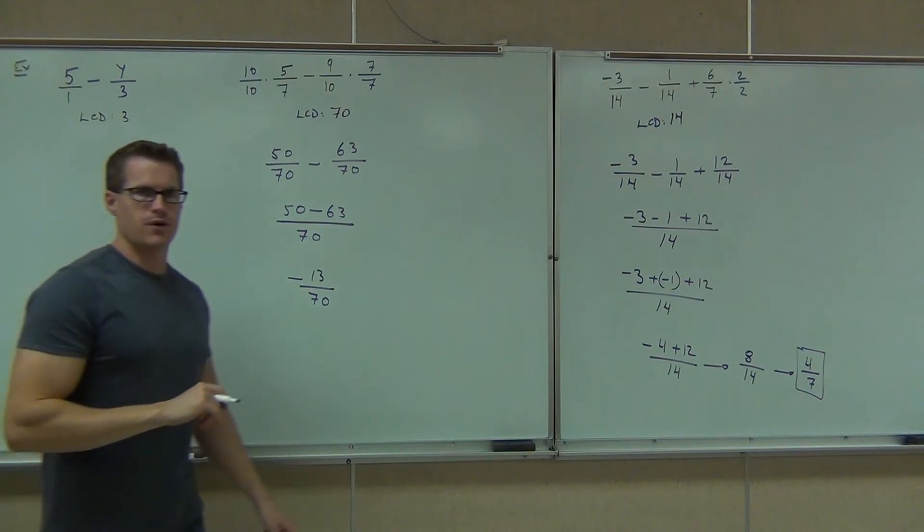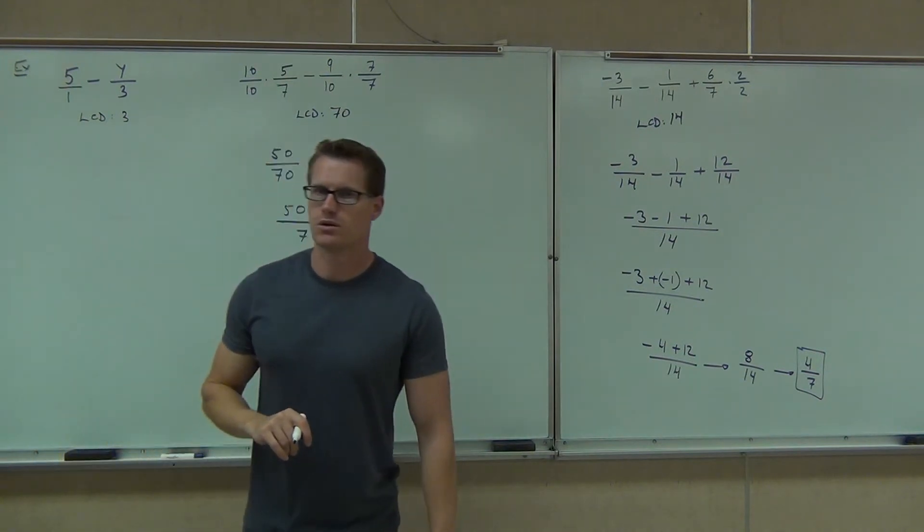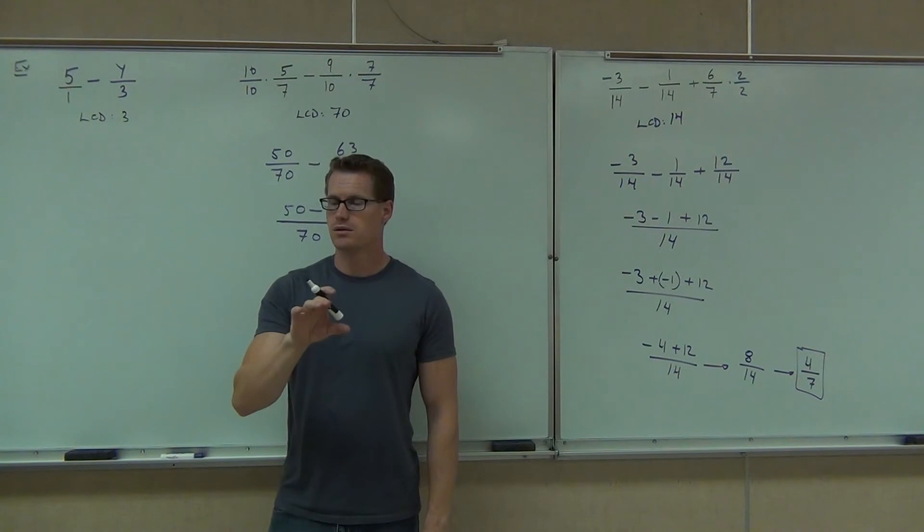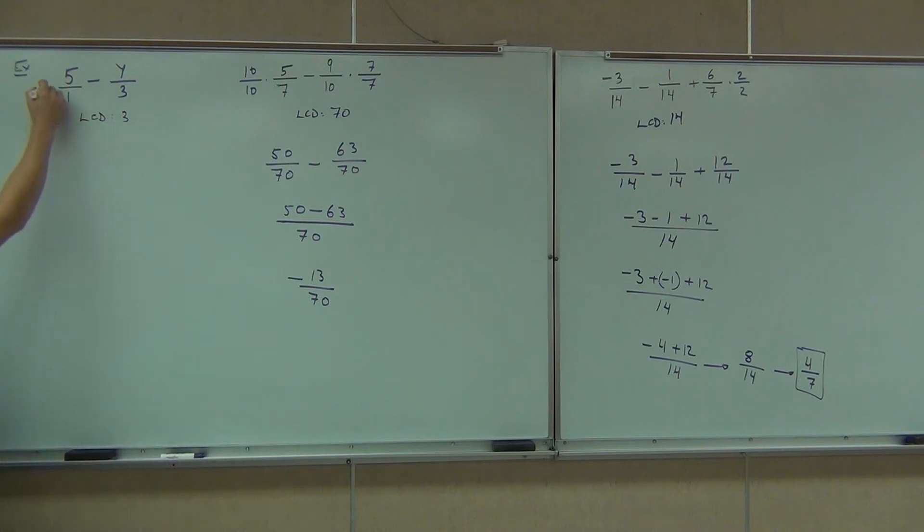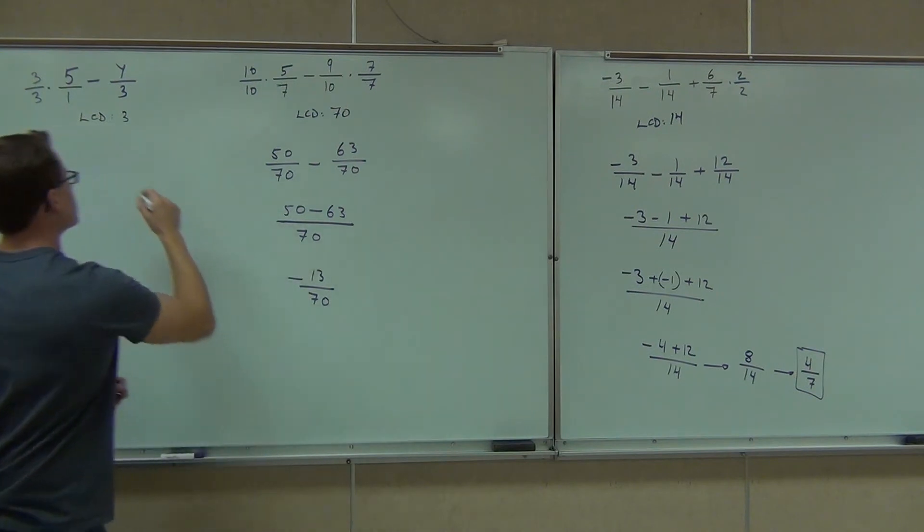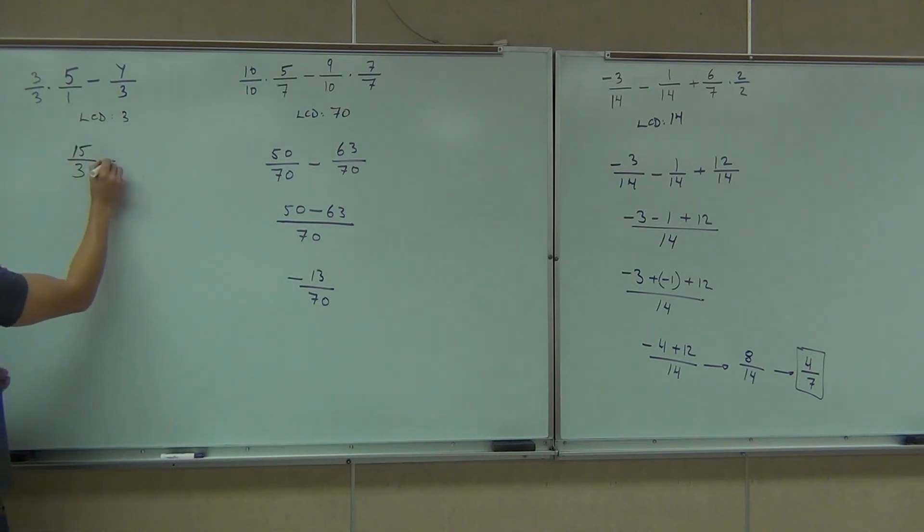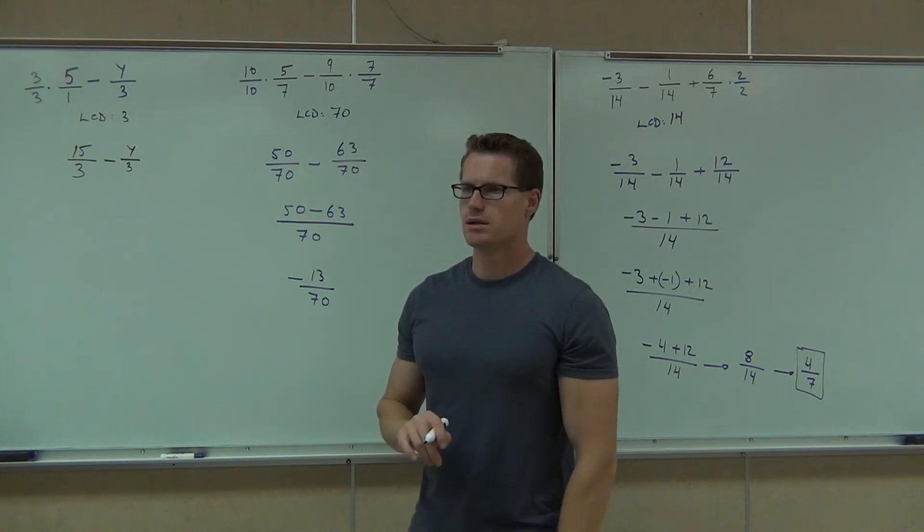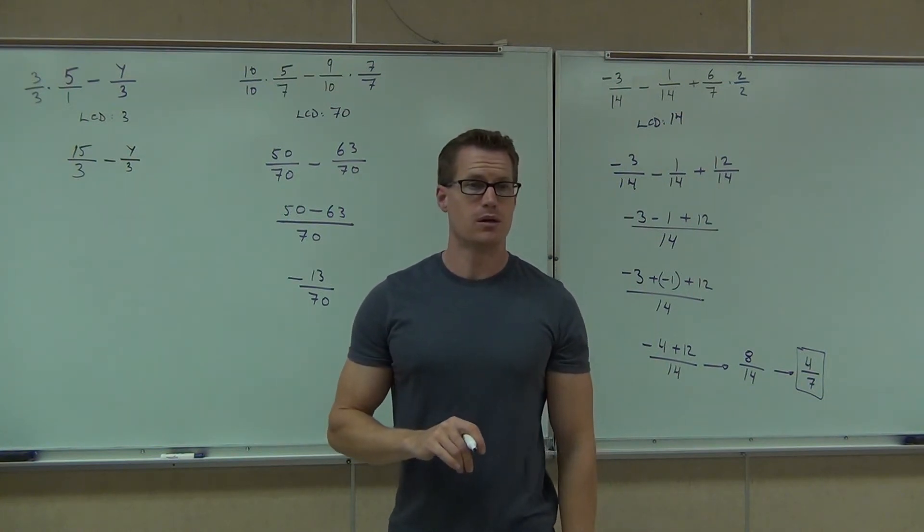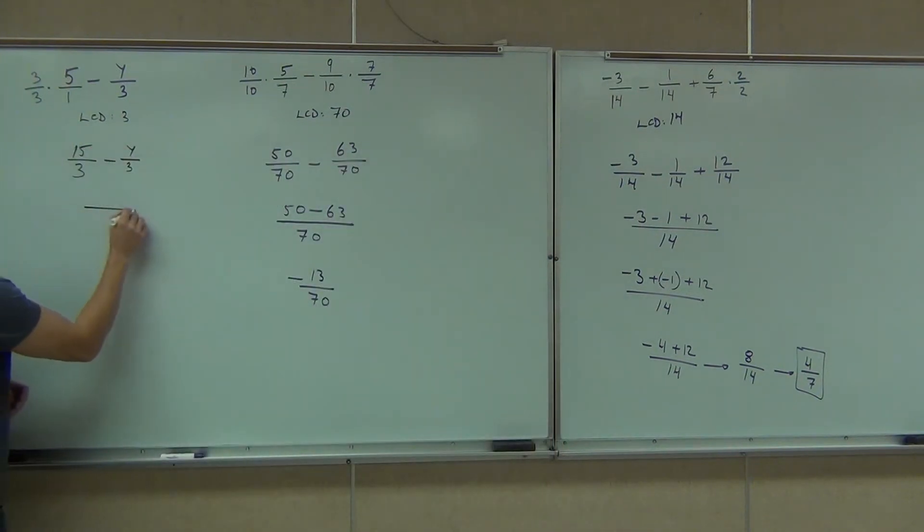Do I need to multiply one fraction or both fractions? One. I've already got the 3 in one spot, right? So I don't need to multiply this one. I do need to multiply this fraction. What do I need to multiply that by? 3 over 3. First fraction is going to become how much? 15 over 3. Minus this fraction didn't change at all. What's our denominator going to be? 3.